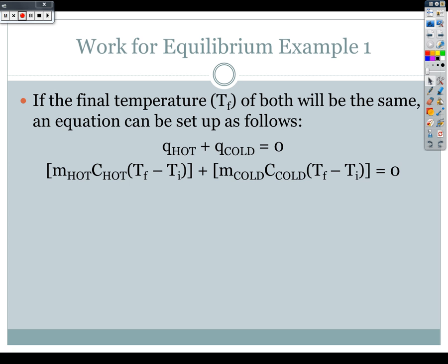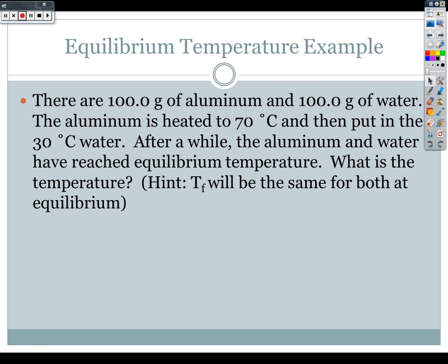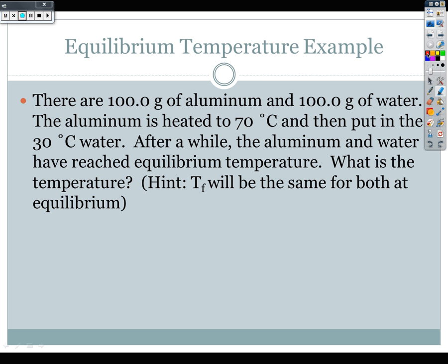And I can have m hot C hot times T_f minus T_i plus m cold C cold times T_f minus T_i is equal to zero. And then I can input all of my data. Now, if I go back to this, I can show you where my hot and my cold data is. So if I'm looking at my aluminum, my aluminum started out at 70 degrees Celsius, which is hotter than 30.